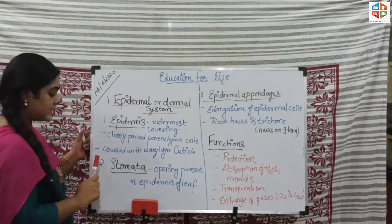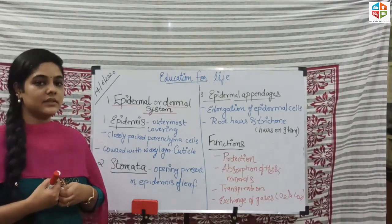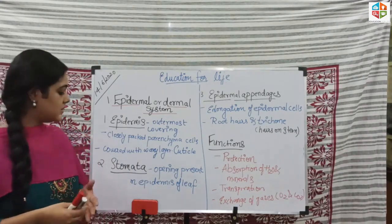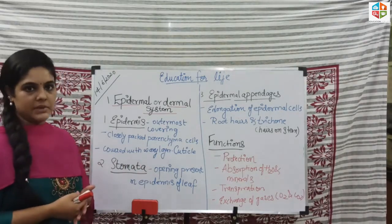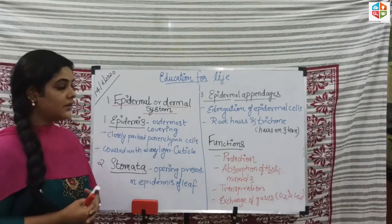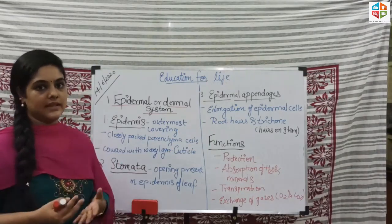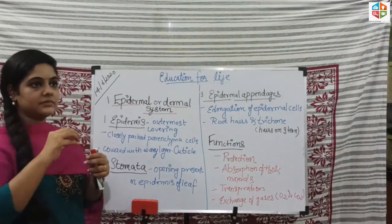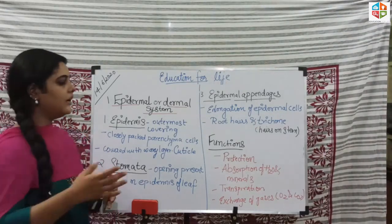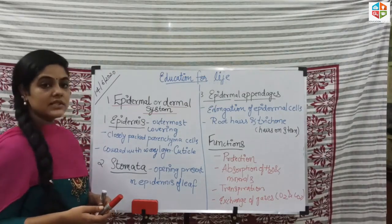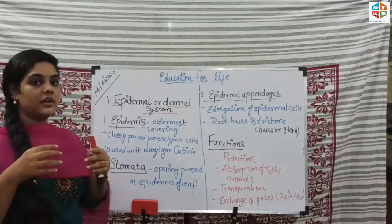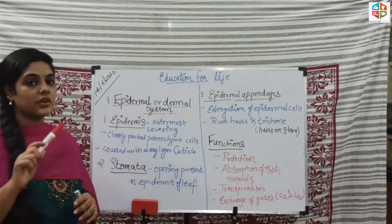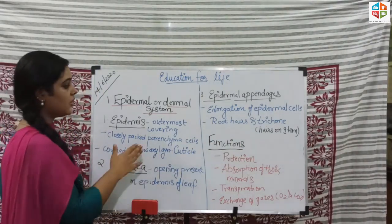The second component is stomata. Stomata are the openings present on the leaf surface responsible for the exchange of gases. Stomata are found in the lower epidermal cells. The third component is epidermal appendages. Epidermal appendages are elongations of the epidermal cells. Examples include root hairs and trichomes. Root hairs are found in roots, and trichomes are the hair-like structures present on the stem.